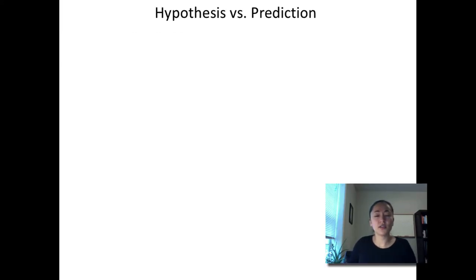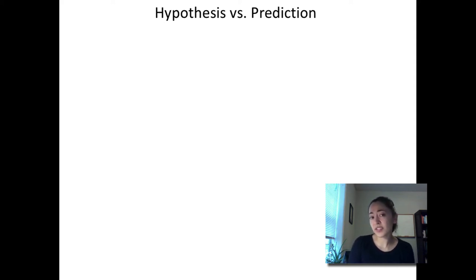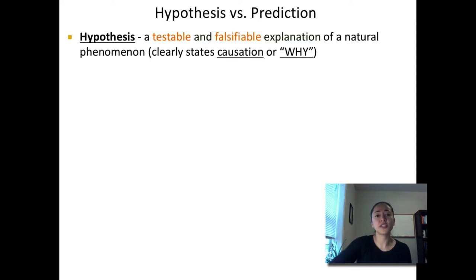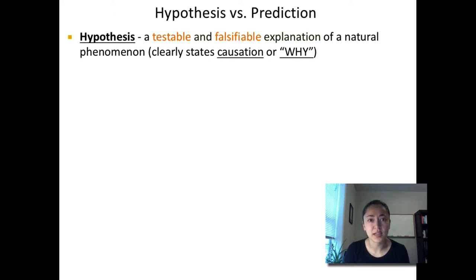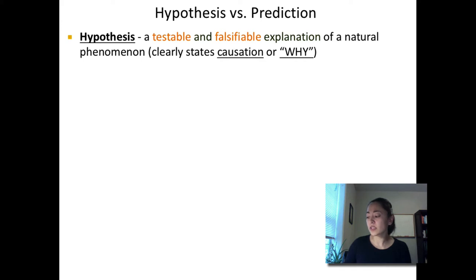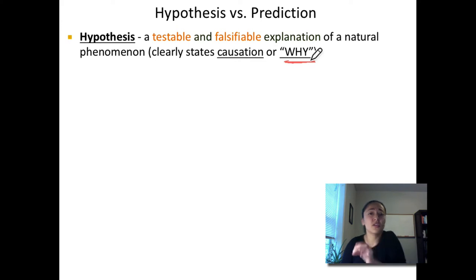The second learning objective says: formulate hypotheses and describe the relationship between hypotheses and predictions. This is probably one of the most difficult concepts from unit one — many students have a difficult time telling the difference between a hypothesis and a prediction. A hypothesis is a testable and falsifiable explanation of a natural phenomenon. It's some sort of explanation for what is expected to happen, and it clearly states a causation — why you would expect this to happen. The why is a really important part. Whenever something is a hypothesis it has to explain why you think you're going to see what you're going to see. If the why is not included, then it's simply a prediction.